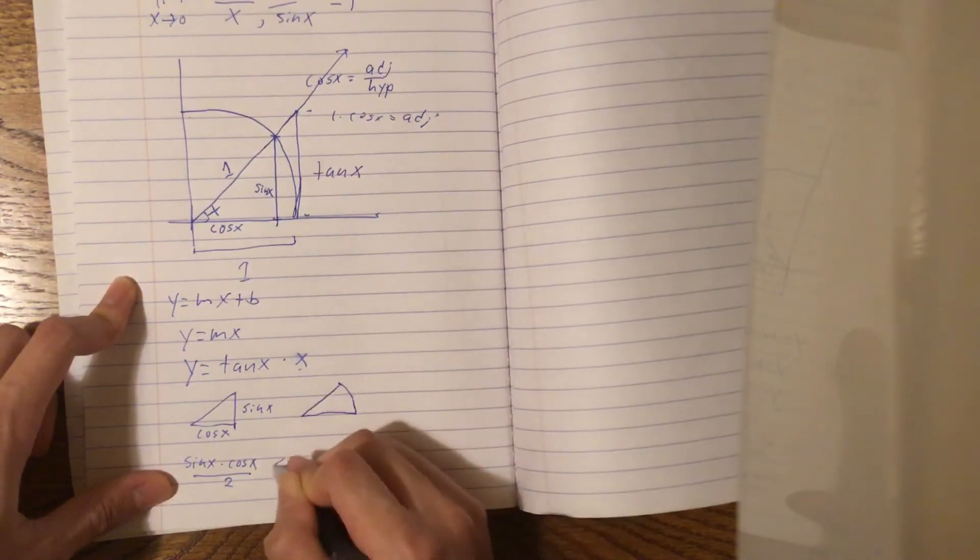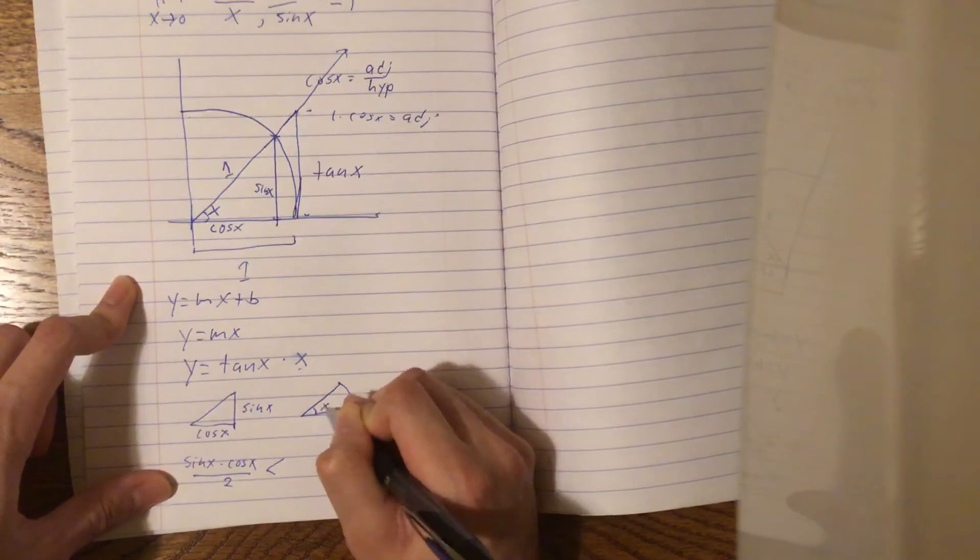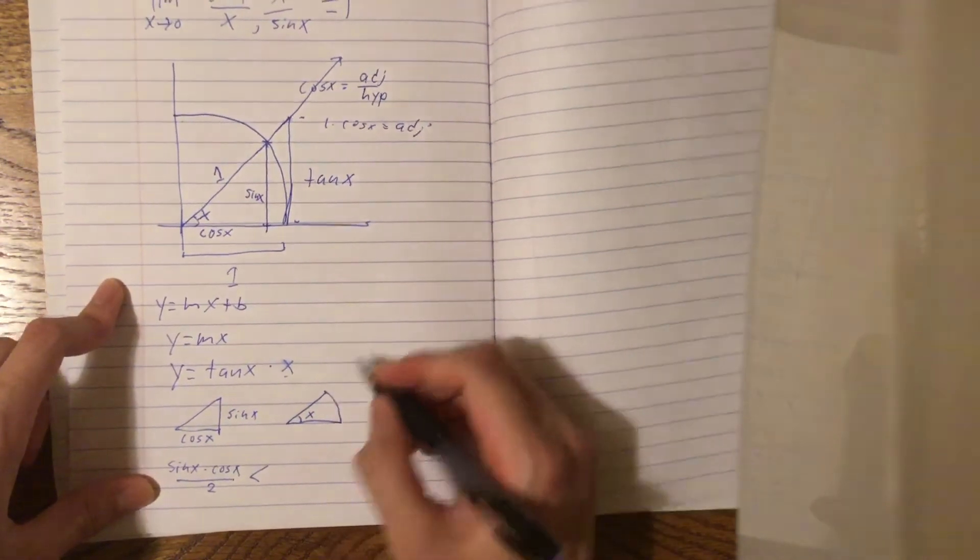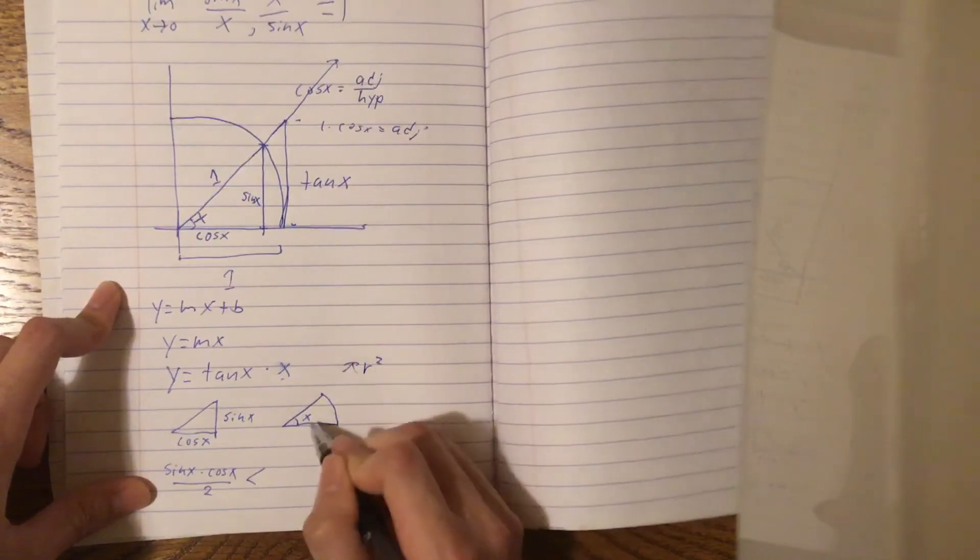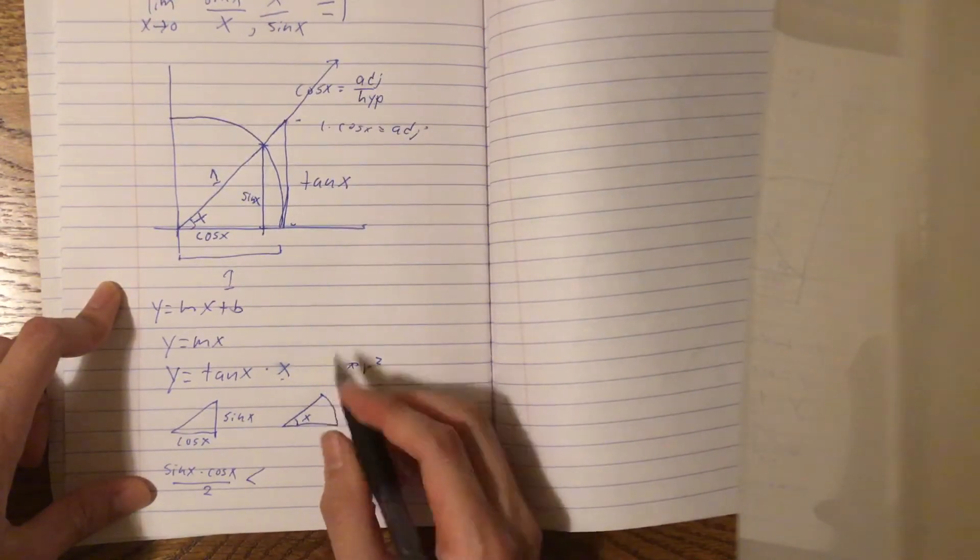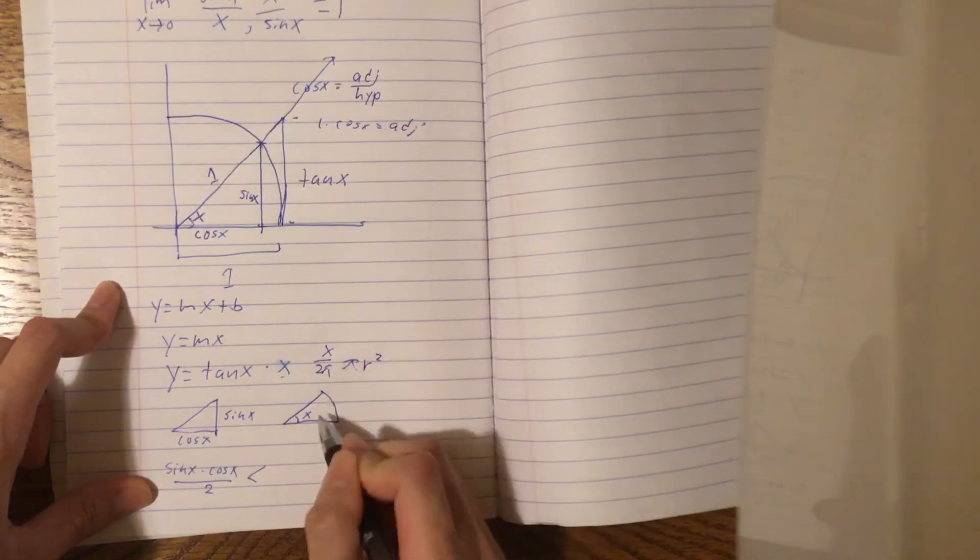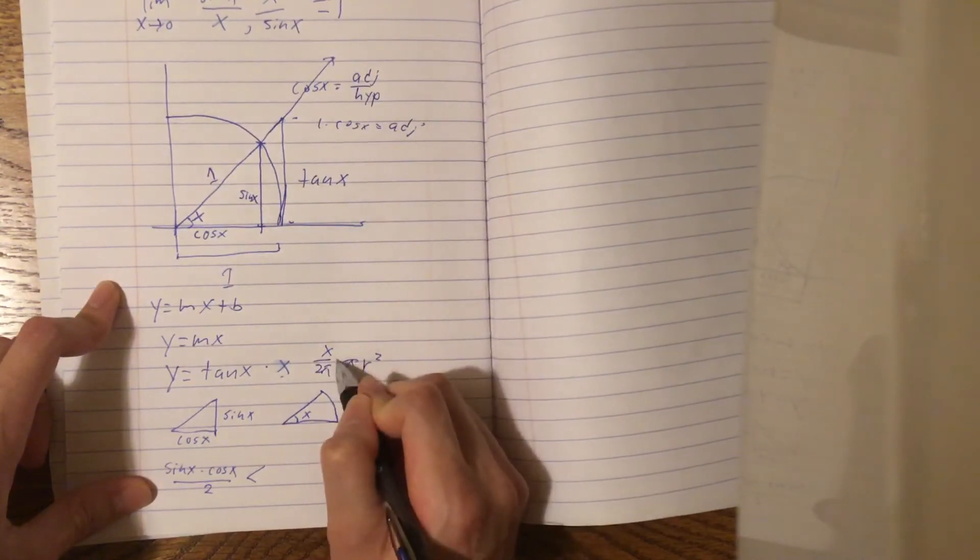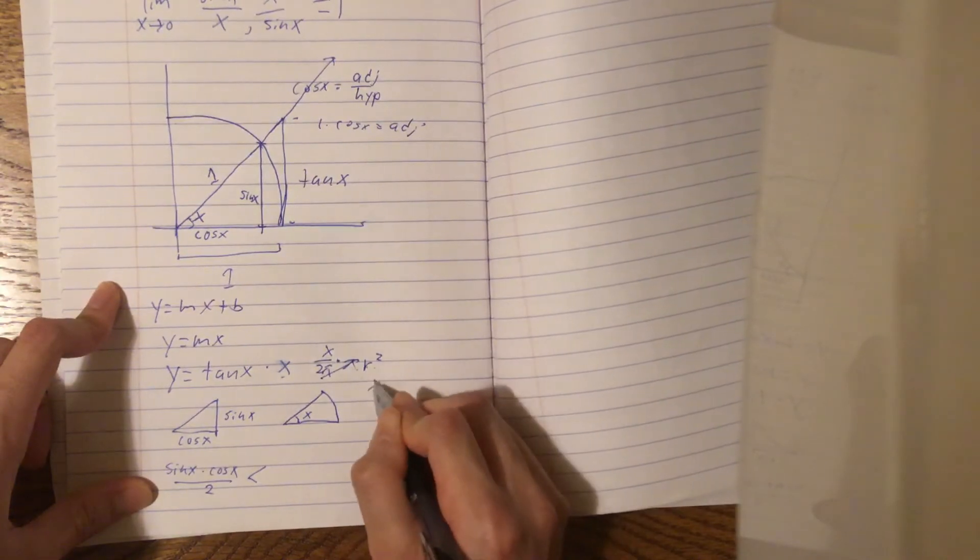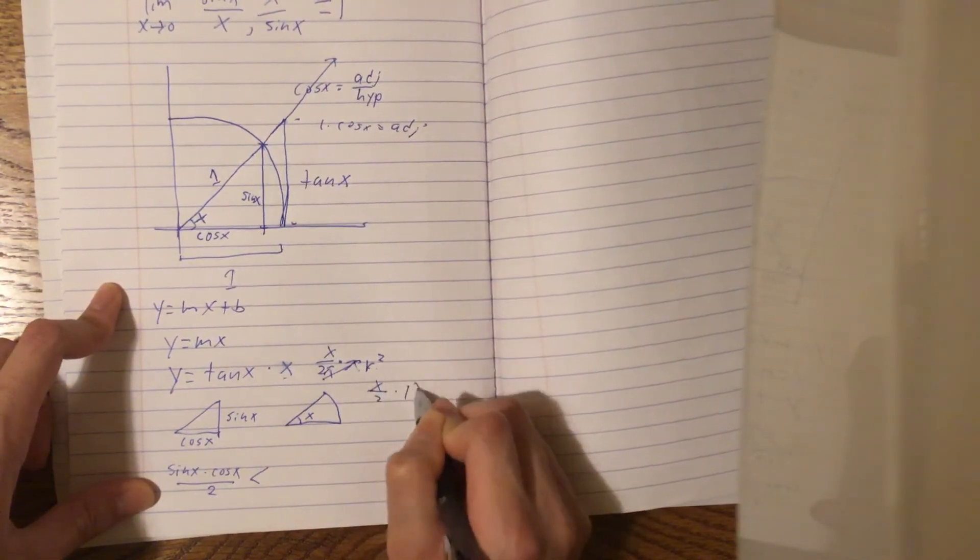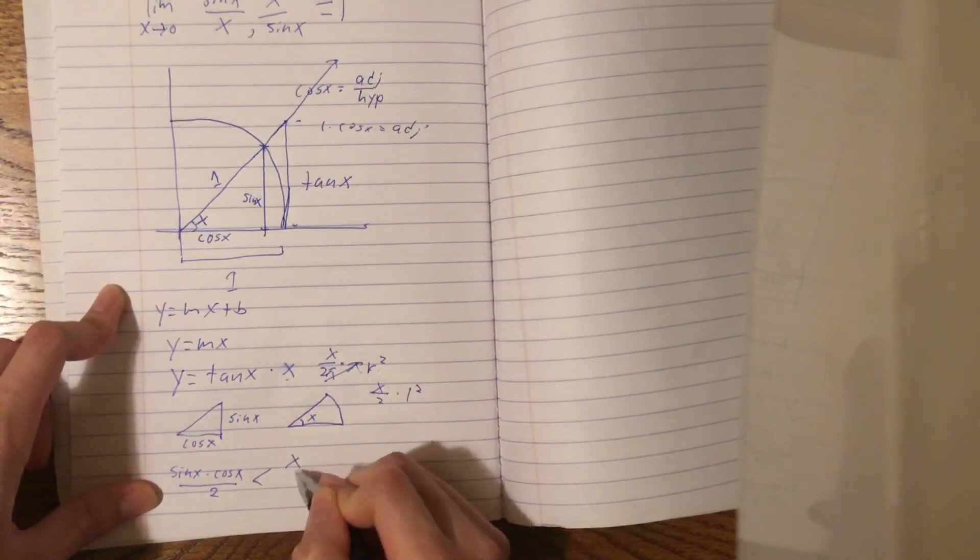And if we're in radian mode, this pi section should equal to, well, the area of a circle is just pi r squared, right? And this is a section of the pi, so x over 2 pi. And we're in radian mode, so, then the pi's cancel out, and the r is just 1. So, we get x over 2 times 1 squared, and the area will just be x over 2.